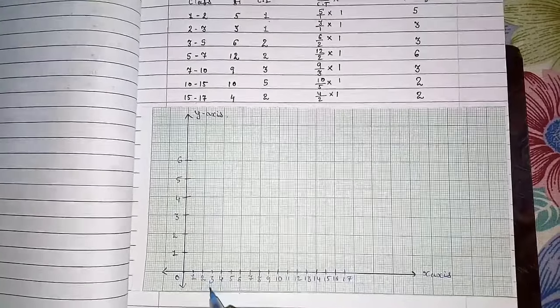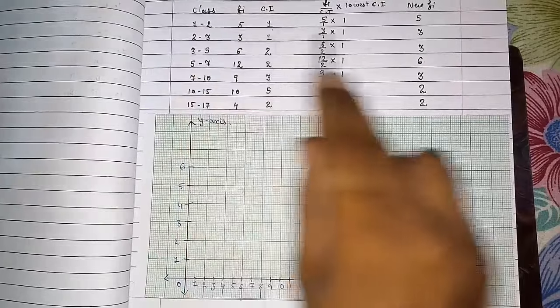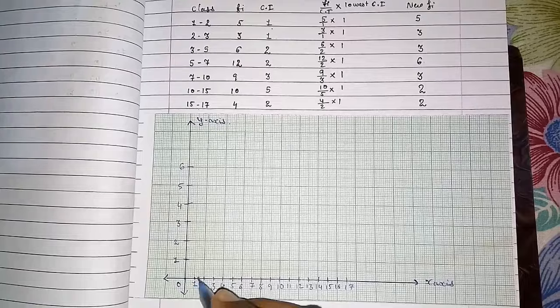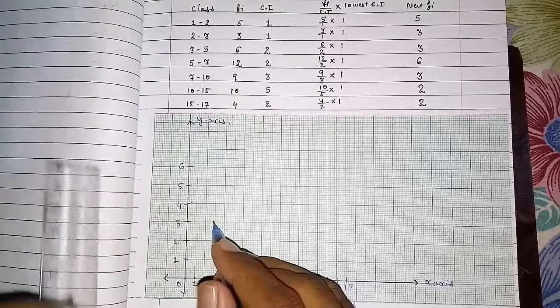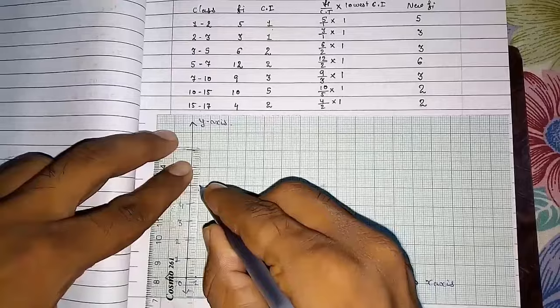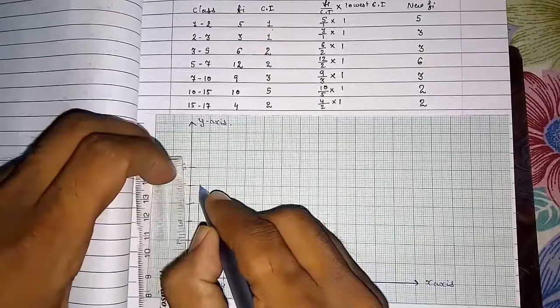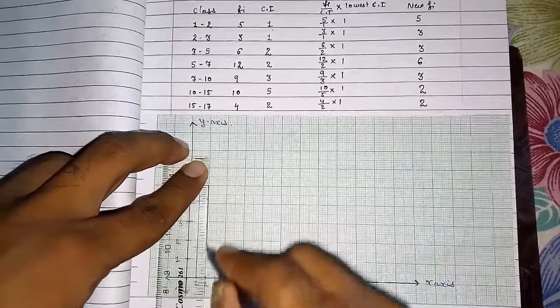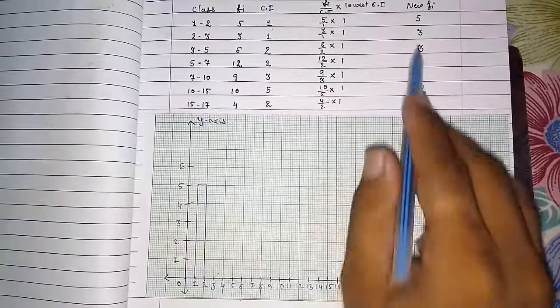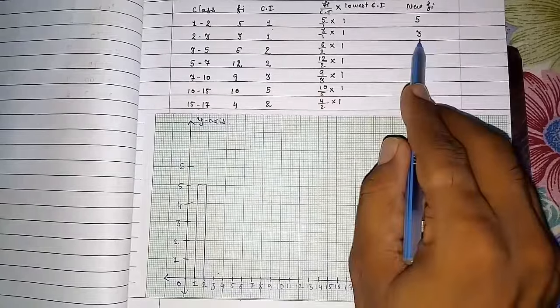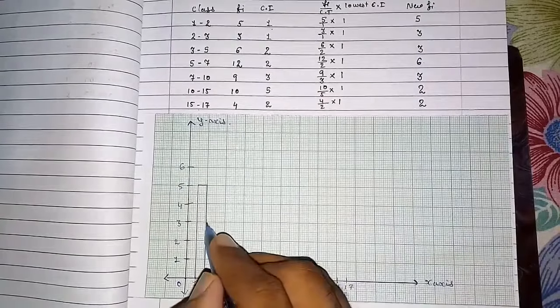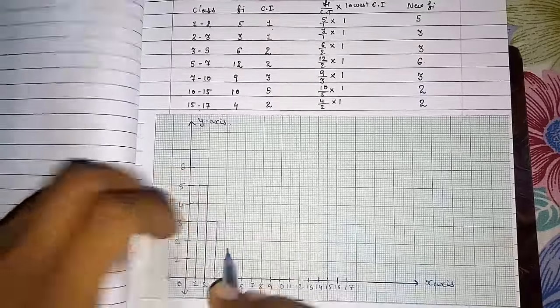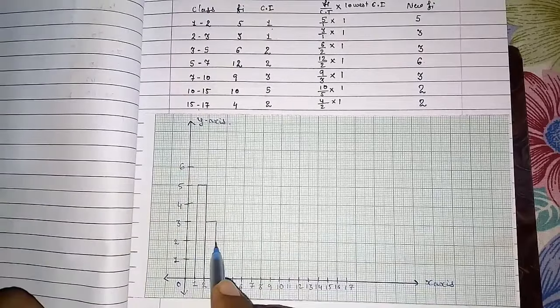Now what we have to do? We know the first class 1 to 2 is having a frequency of 5. So first we have to start with 1, and it is having 5. So here I am drawing it. This will be our first class. Then 2 to 3, so we have to take here 3. Now you will not get the bar of same size everywhere. Look here.